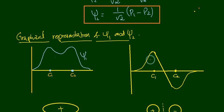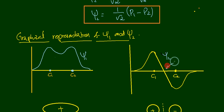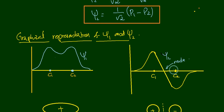For ψ2 = (1/√2)(p1 − p2), in the midpoint between C1 and C2 the wave function completely vanishes — there is a node. Since p2 is subtracted from p1, the electron density is substantially decreased between the two atoms, corresponding to the antibonding level, which does not favor bonding.